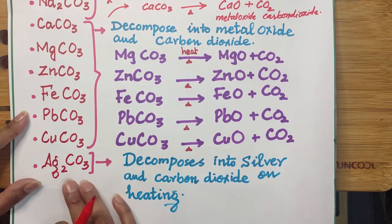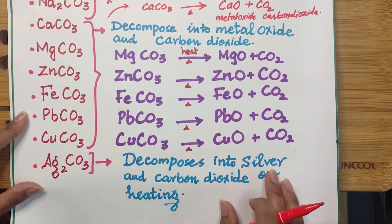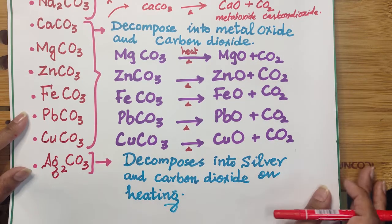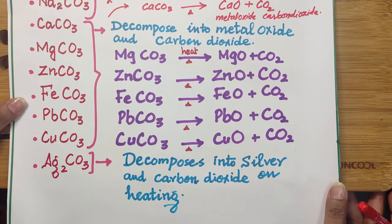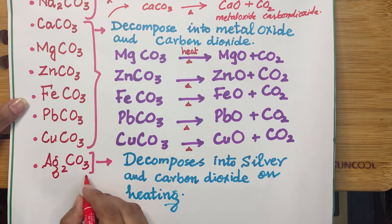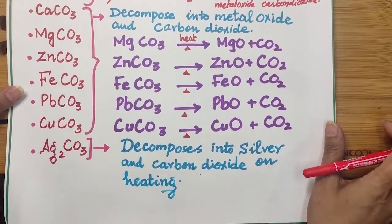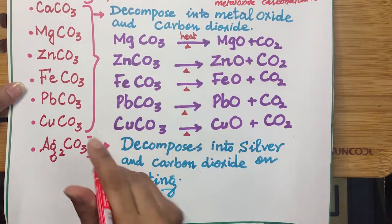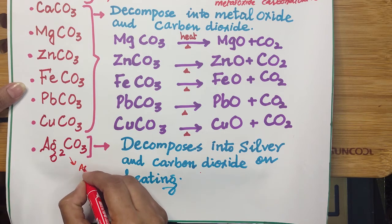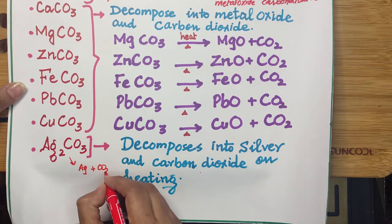Whereas silver carbonate decomposes differently on heating — we do not get silver oxide. When we heat silver carbonate it gives us silver metal plus carbon dioxide gas.